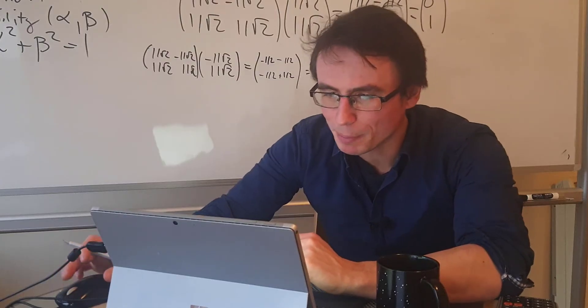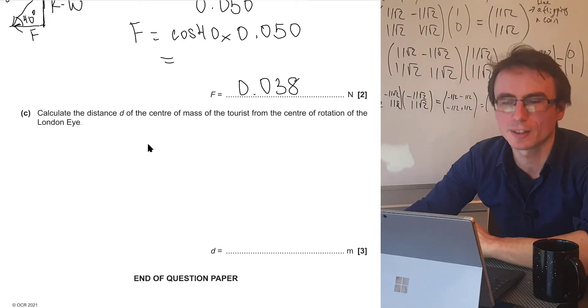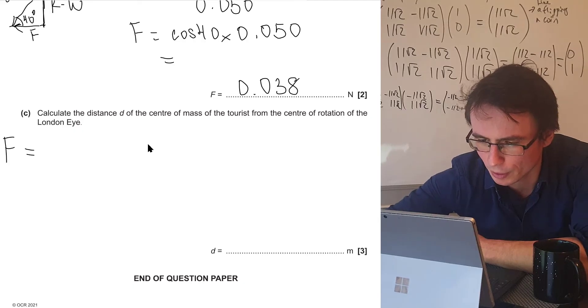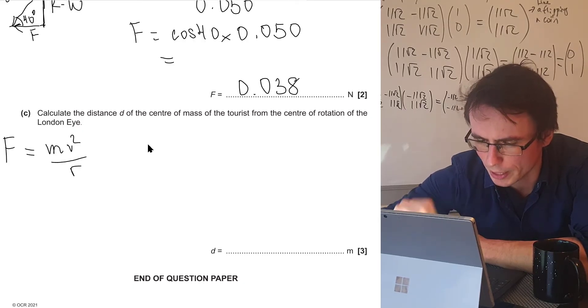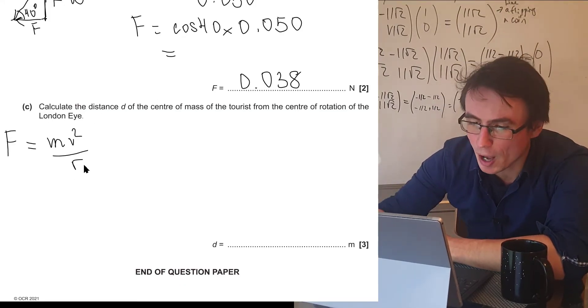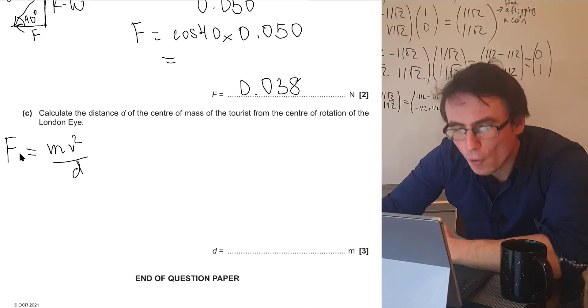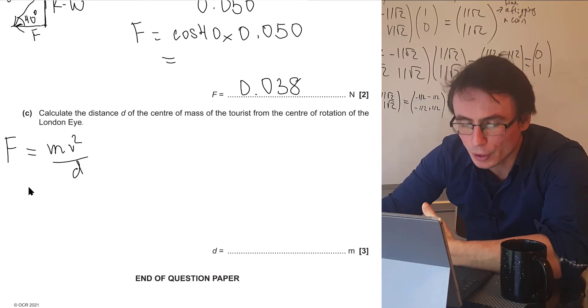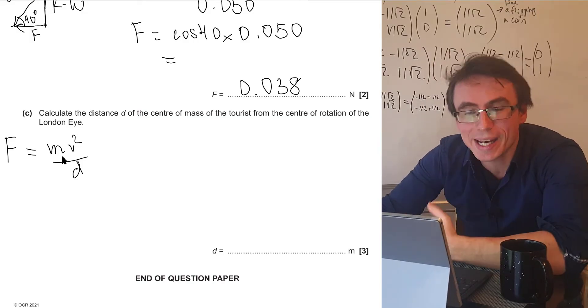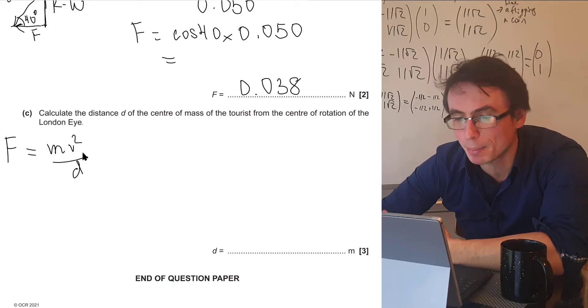Final part of this paper, calculate the distance D of the center of mass of the tourist from the center of rotation of the London Eye. So in a way, we're just going to use our good old equation that force is equal to MV squared divided by R. However, in this question, they've simply called the distance rather than R, D. We could work out the mass because we are given the weight of the tourist and we can work out the speed because we know the time period of rotation.